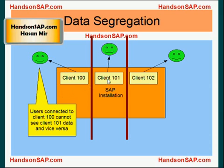Similarly, users connected to client 101 cannot see any other client's data. So data is protected — this is like hard boundaries.